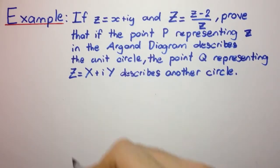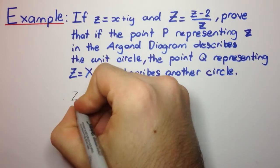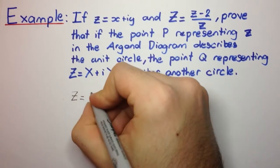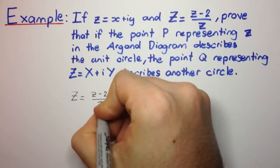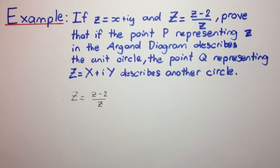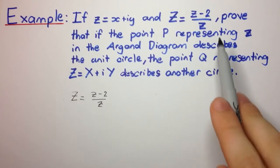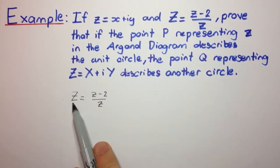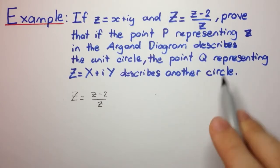Okay, so what do we have? We have big Z equals little z minus 2 over little z. Now we want to try and manipulate this to show that we have a circle for capital Z. So what information have we been given? Well, we know that Z describes the unit circle.